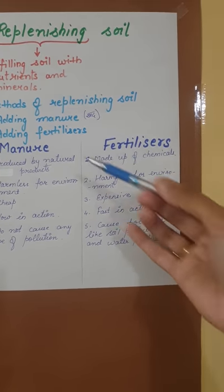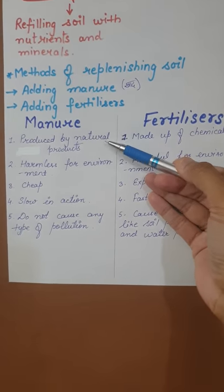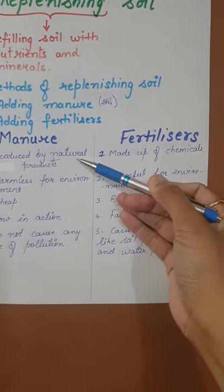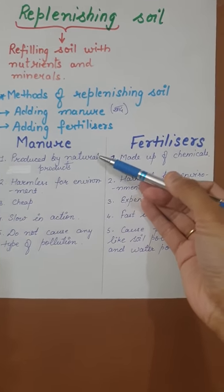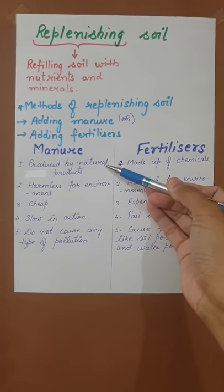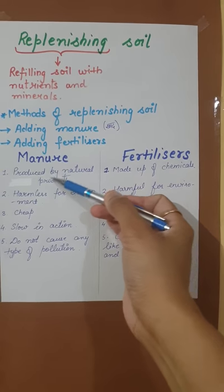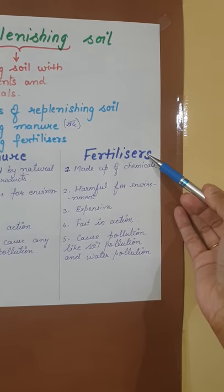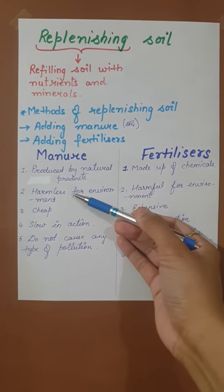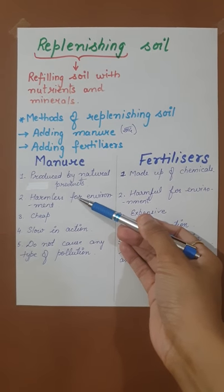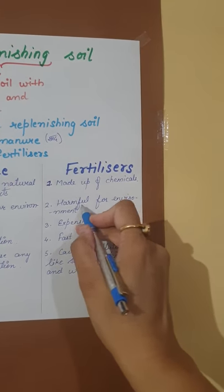Let's understand the difference with a table. Manures are made up of natural products — paper, wood, dead plants and animals, fruit peels, vegetable peels. But fertilizers are made up of chemicals. Manures are harmless for the environment, whereas fertilizers are harmful for the environment.